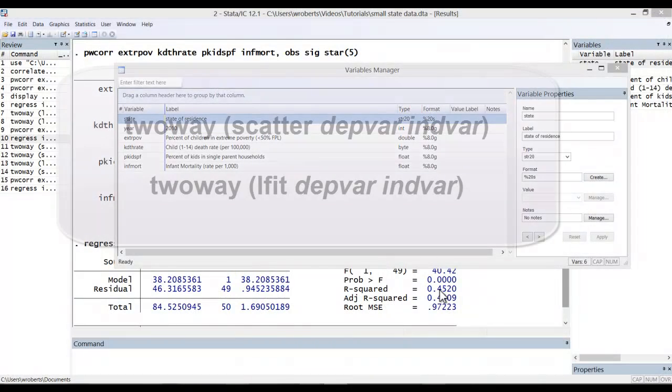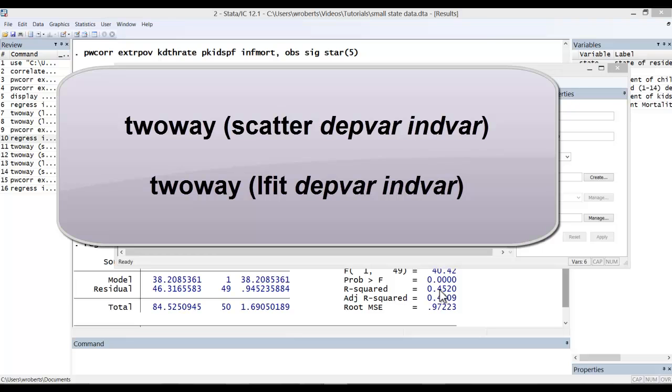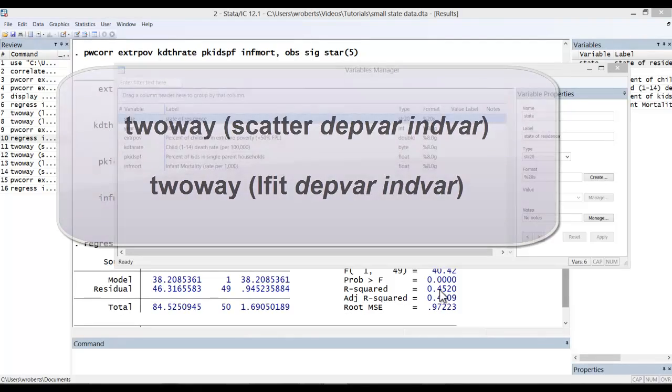Now, the commands to produce scatter plots and fitted lines are actually quite simple, and you can see them here. They're so simple, in fact, that you probably don't need to go through the menu system to create them. Nonetheless, I'll demonstrate the menu system so that you can see how it's done. We'll then examine the actual commands along with the graphs.